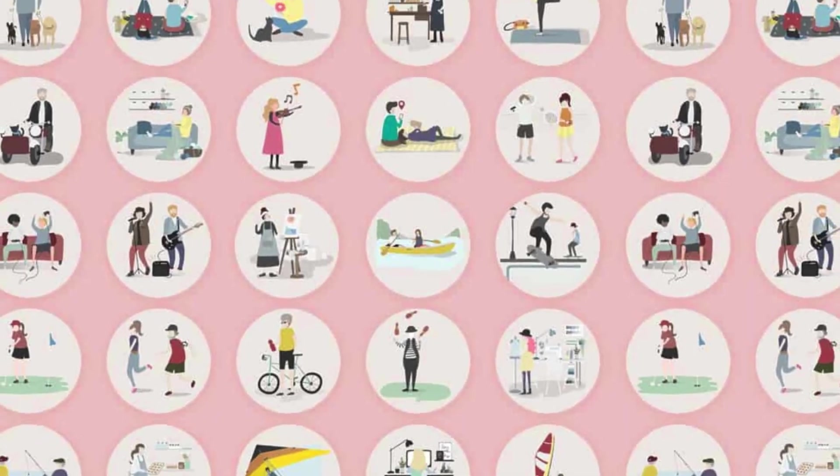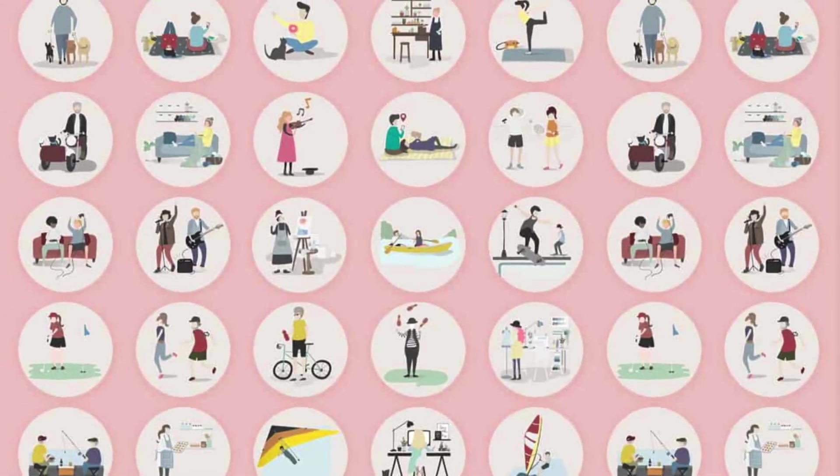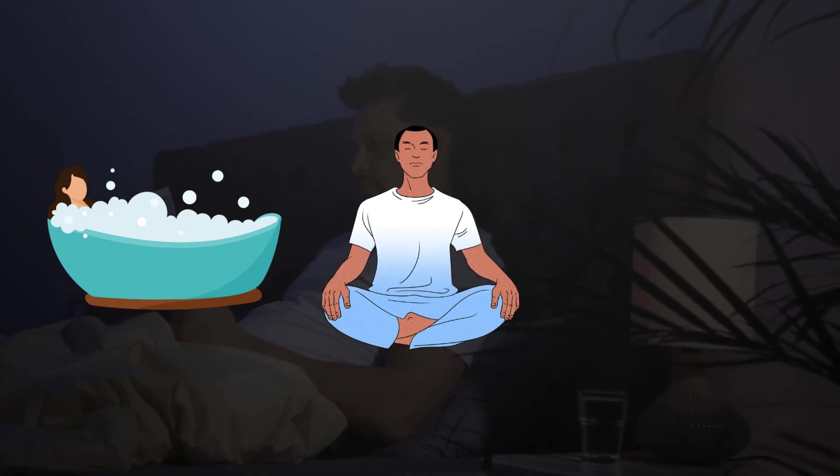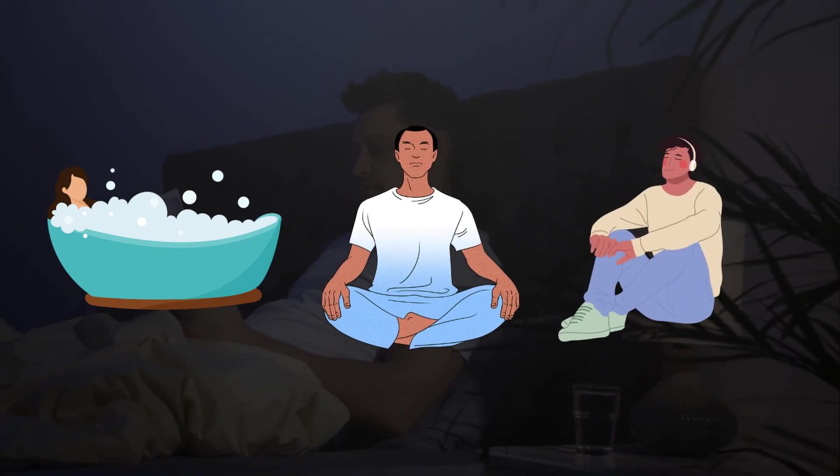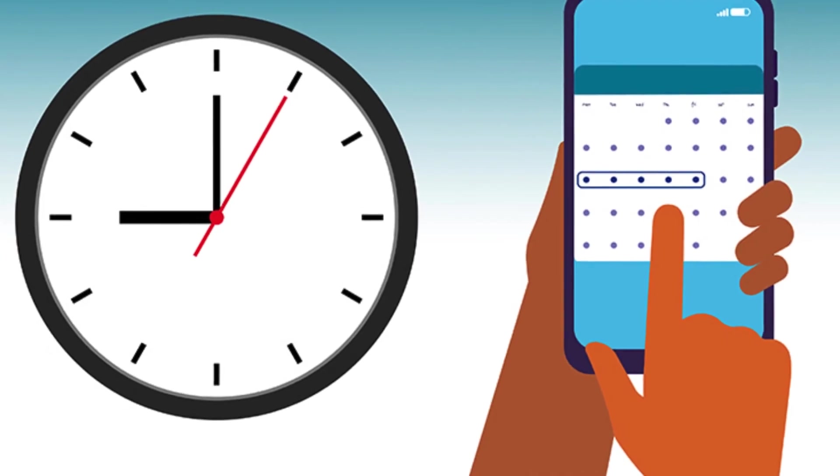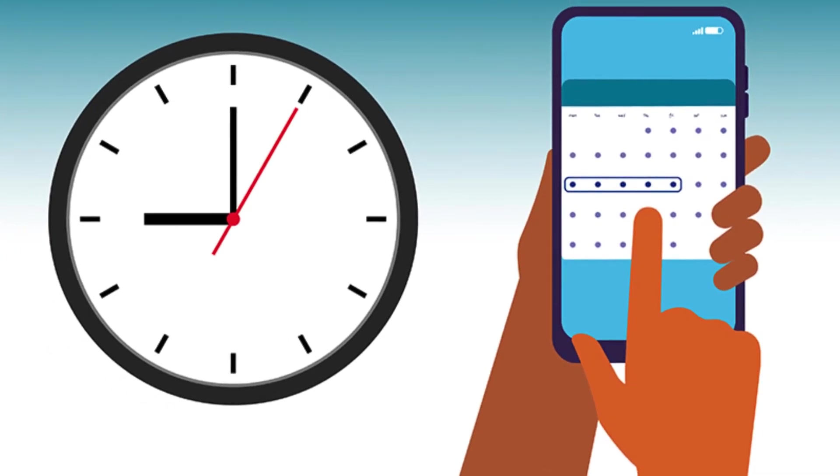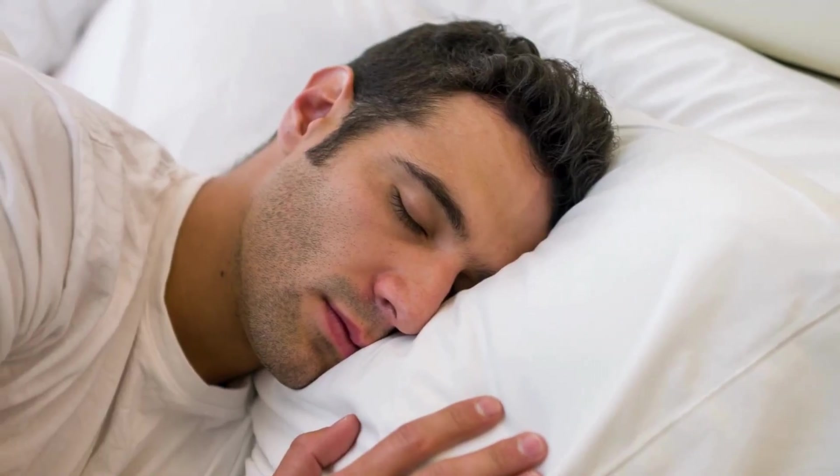Seek alternative activities and hobbies that don't involve screens. For example, wind down with calming activities like reading, taking a warm bath, meditating, or listening to soothing music before bedtime. Maintain a consistent sleep schedule, even on weekends, to regulate your body's natural sleep-wake cycle.